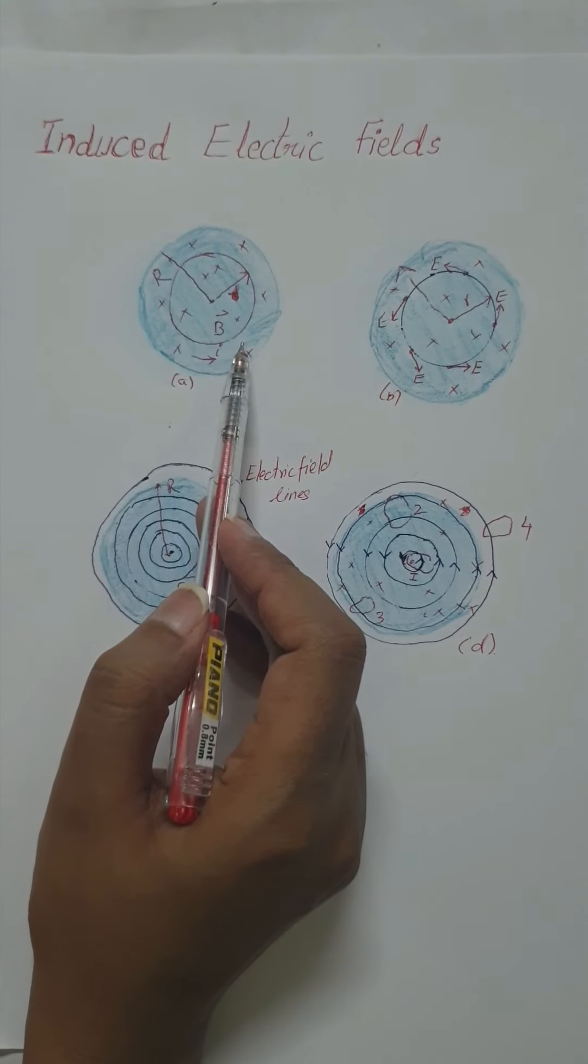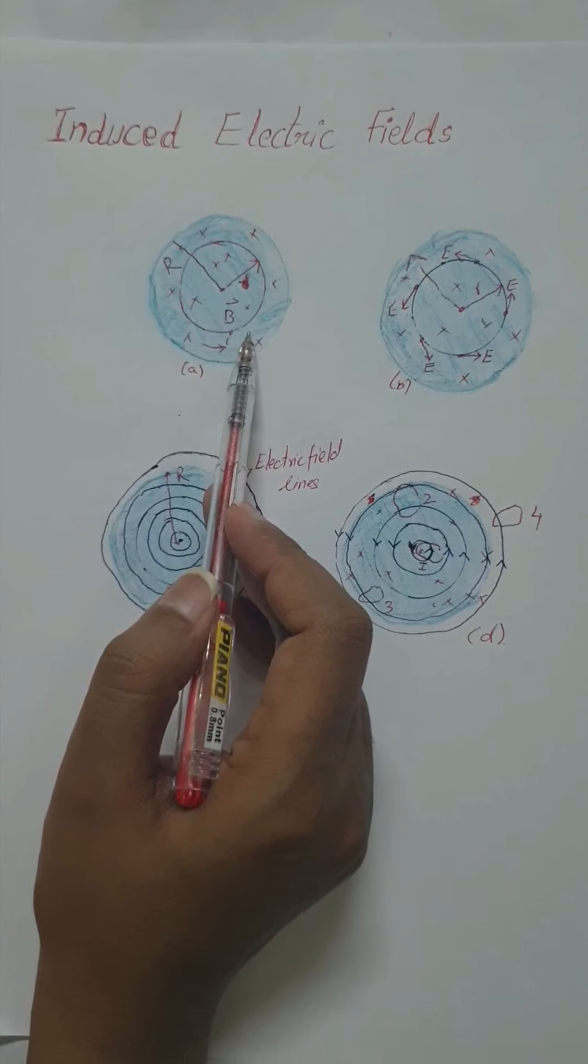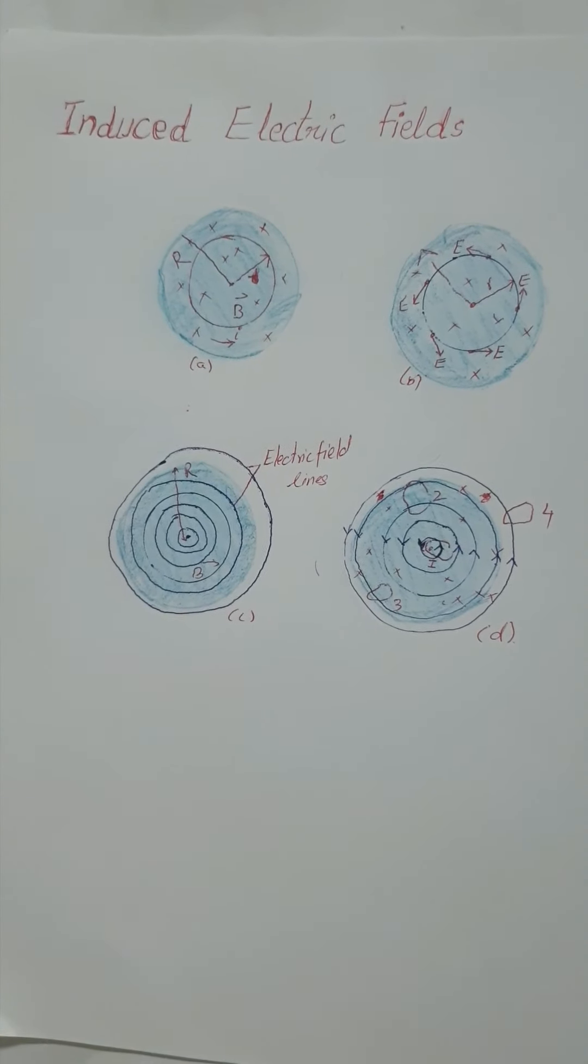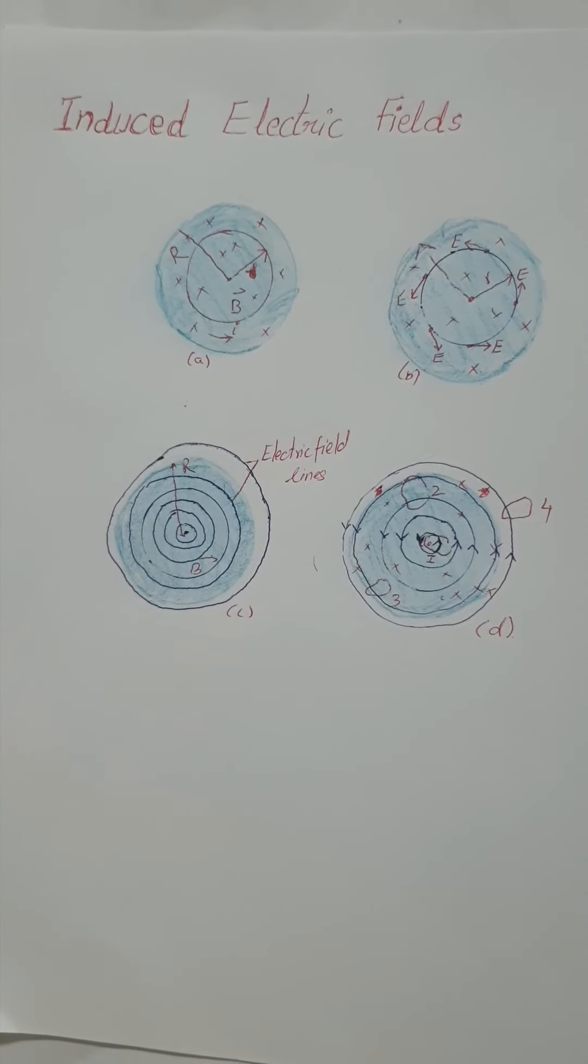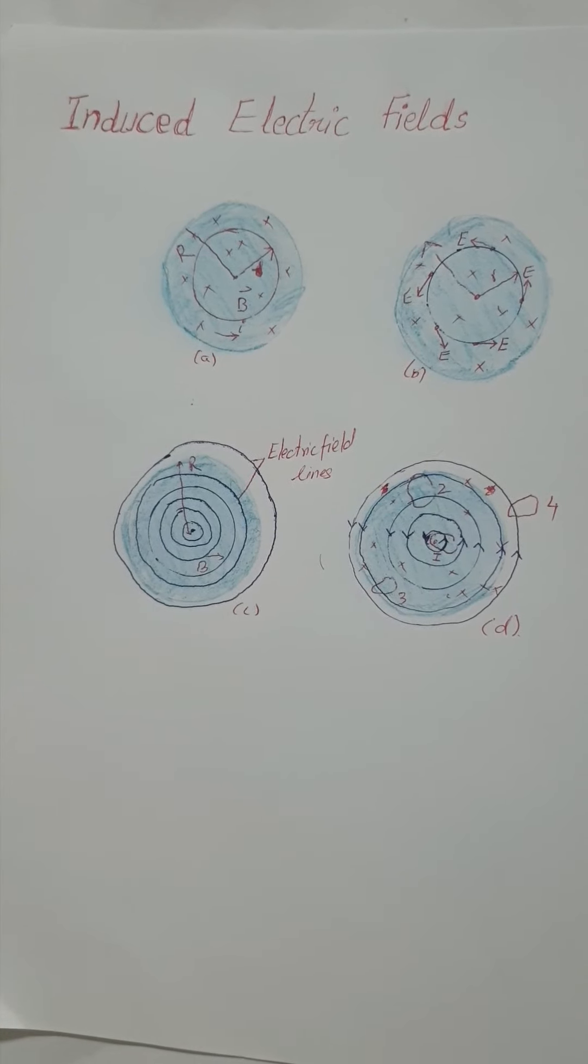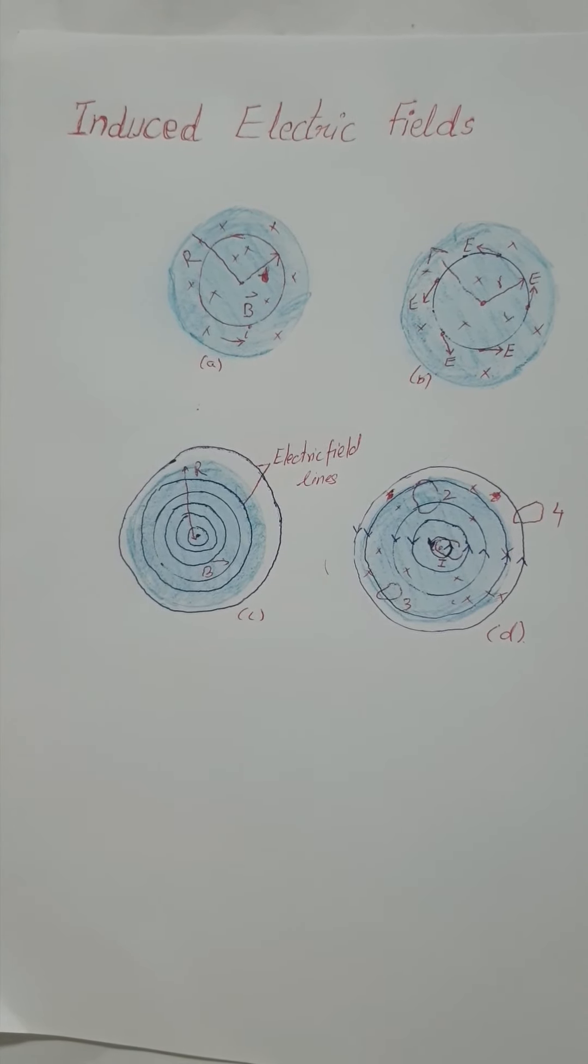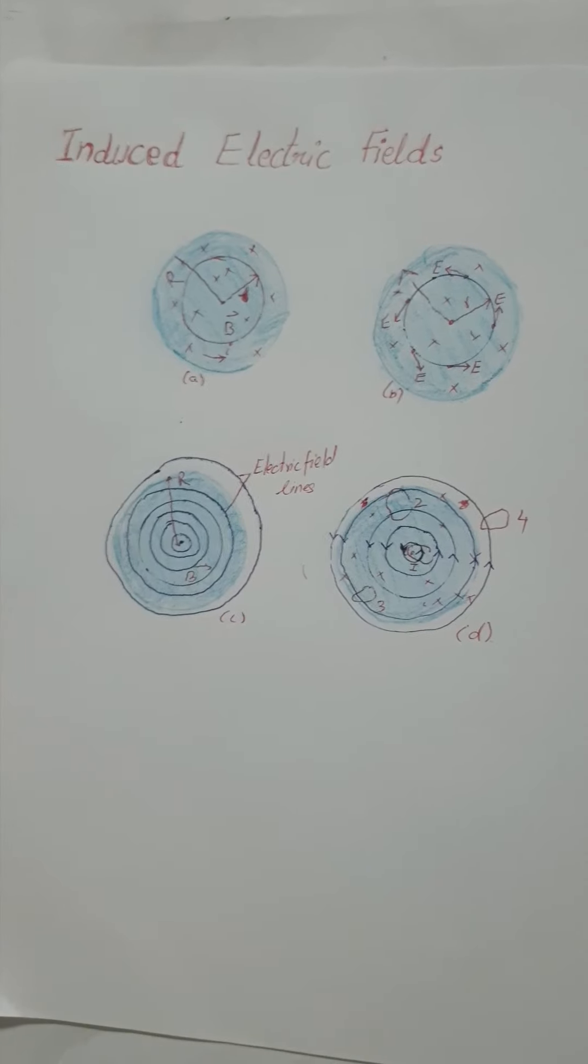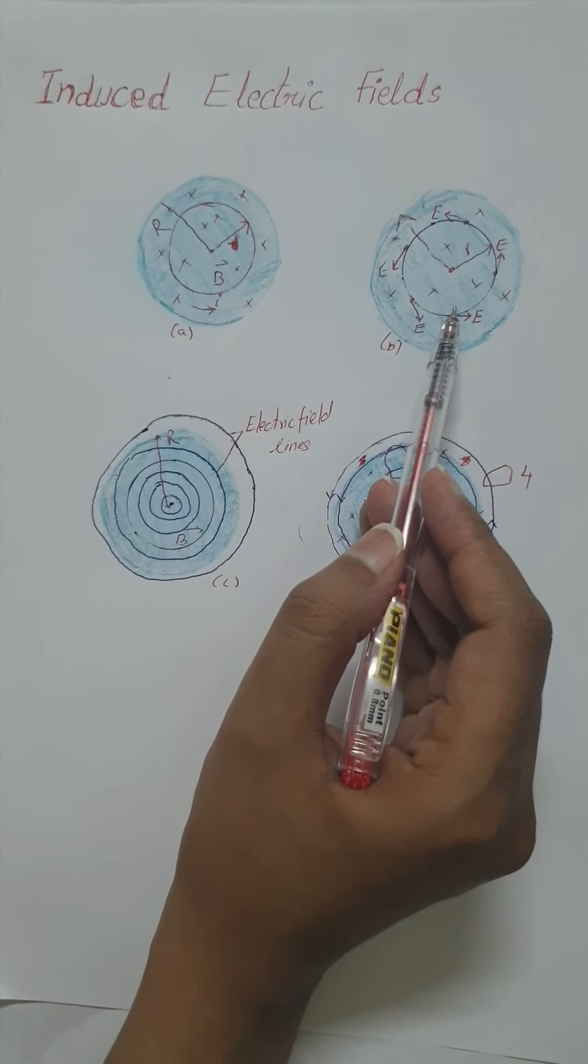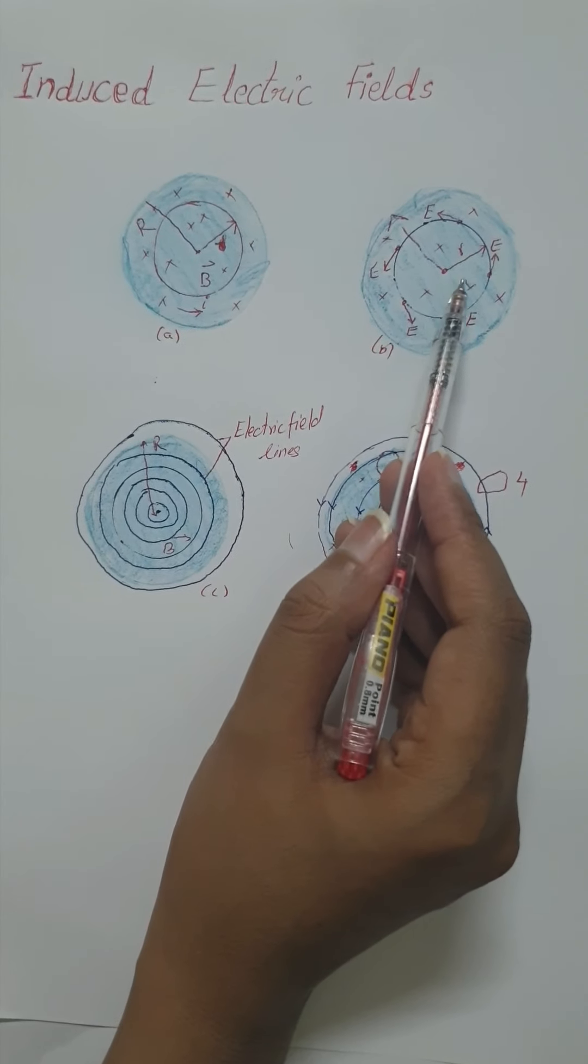The electric field must have been produced by the changing magnetic flux. The induced electric field E is just as real as the electric field produced by static charges. Either field will exert a force Q naught E on a charged particle. So a changing magnetic field produces an electric field. The striking feature of this statement is that the electric field is induced even if there is no copper ring. The electric field would appear even if the changing magnetic field is in a vacuum.